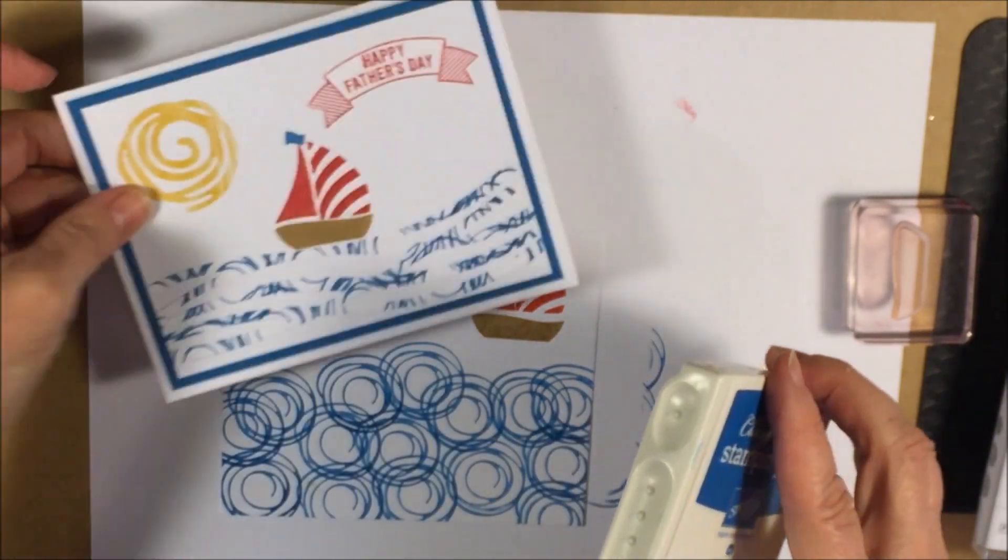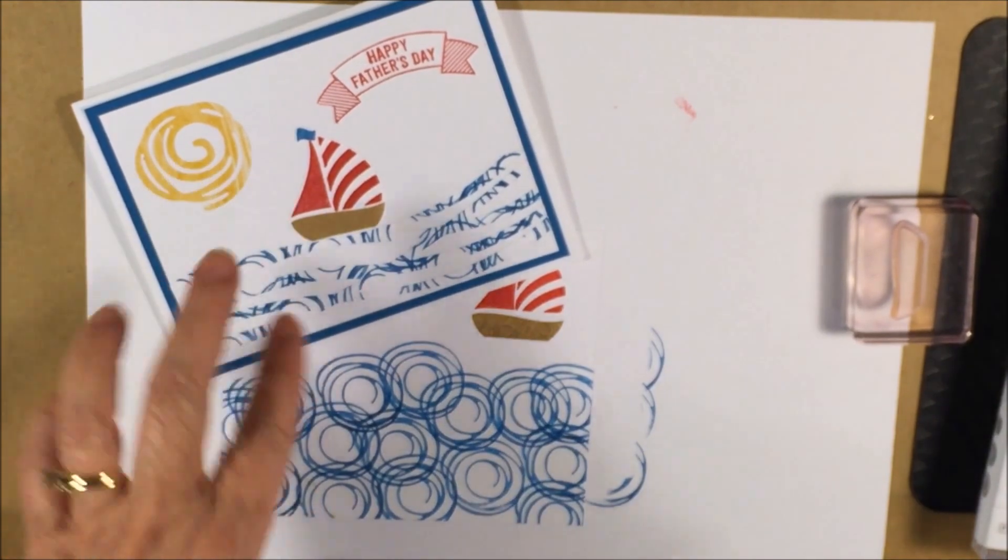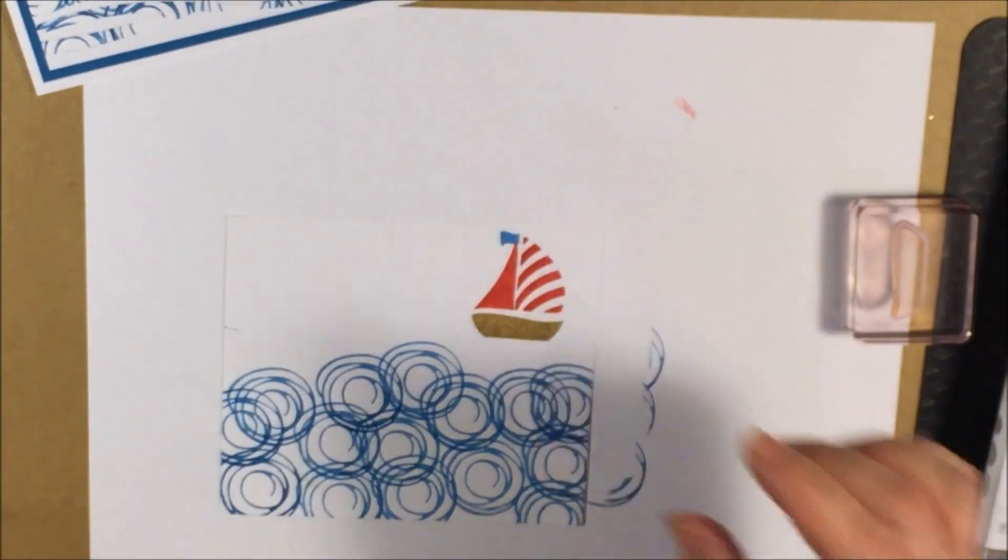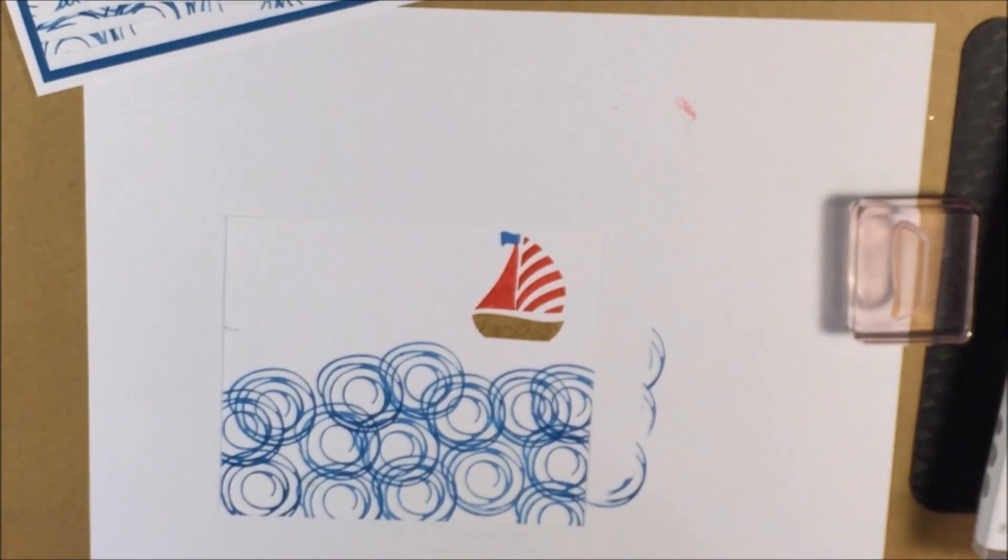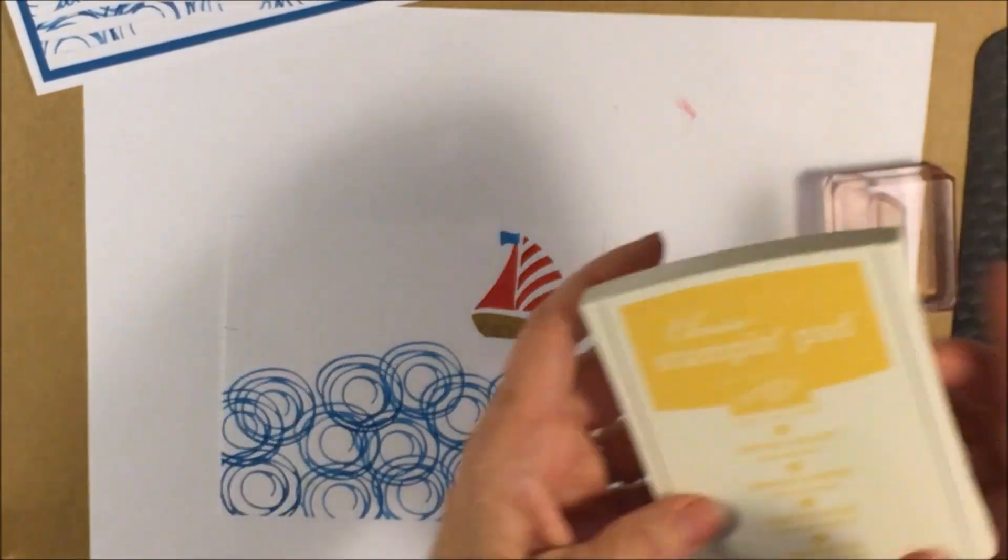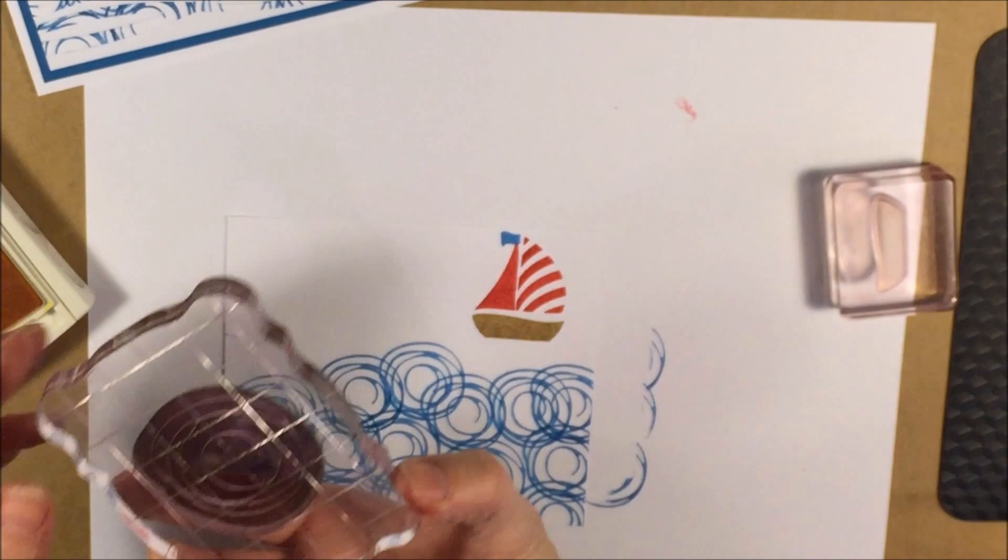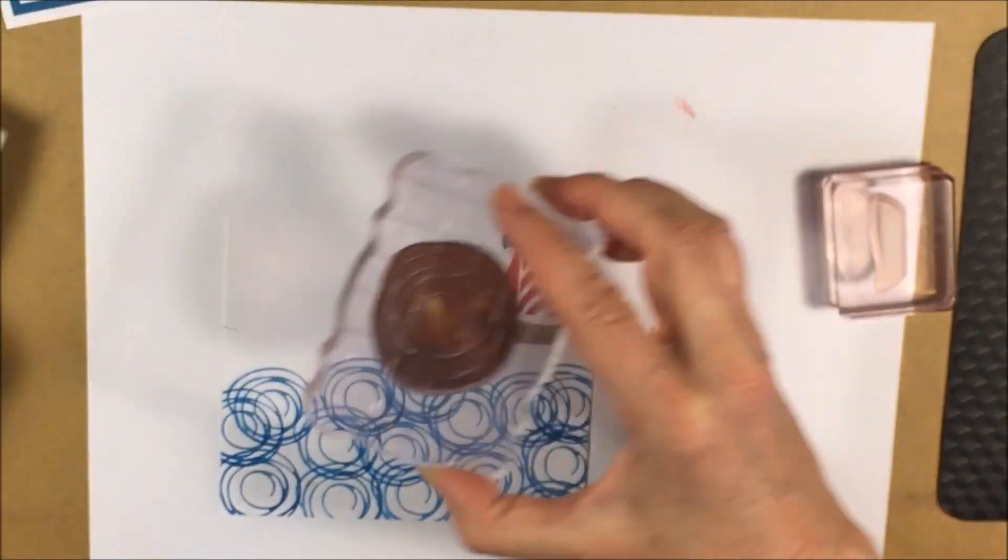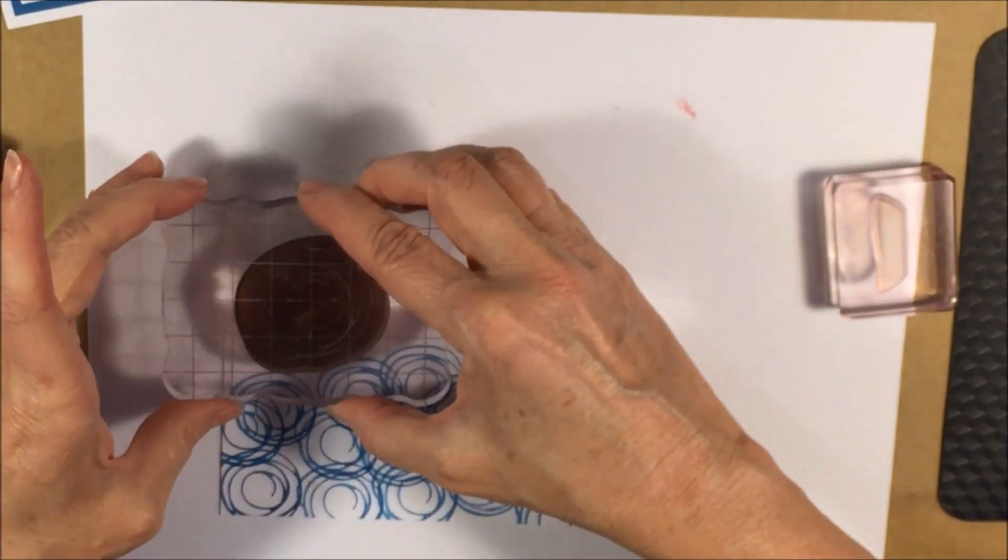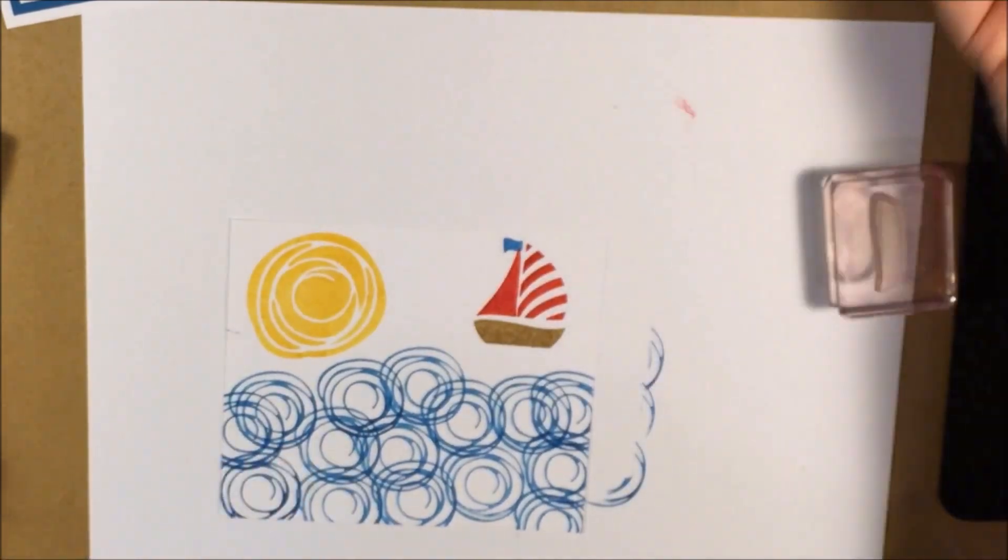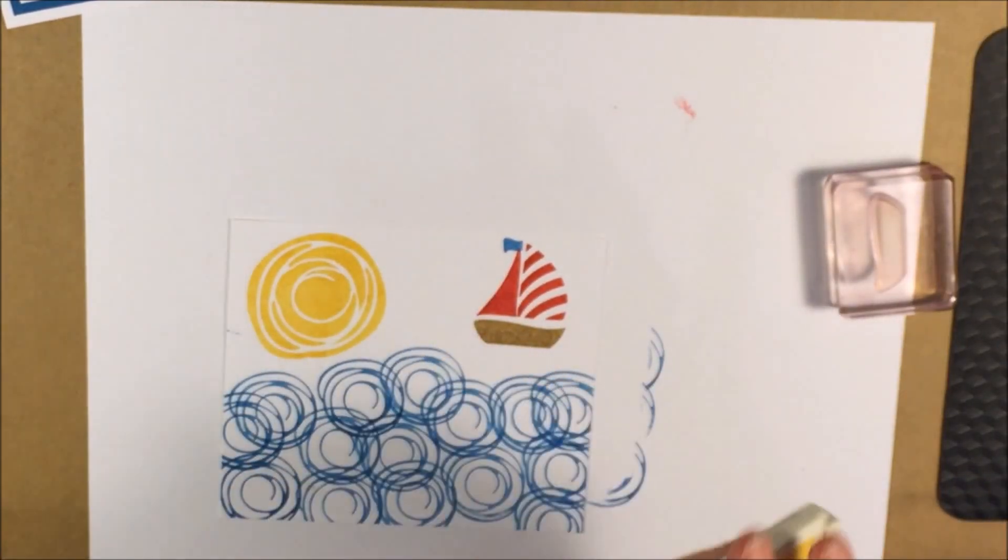And for my card when I made the sun, I had some designer series paper that was yellow and white. But that's a retired paper so I want to show you how you can do it using Daffodil Delight. So I used the big stamp, stamped it like that, and then I'm going to use my framelit and we're going to cut that out.